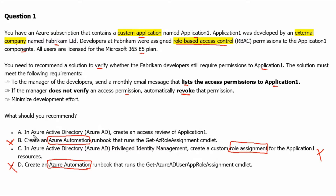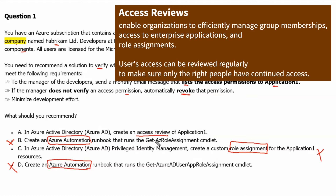Option A: Azure Active Directory — create an access review of Application 1. Access reviews enable organizations to efficiently manage group memberships, access to enterprise applications, and role assignments. User access can be reviewed regularly to make sure only the right people have continued access.